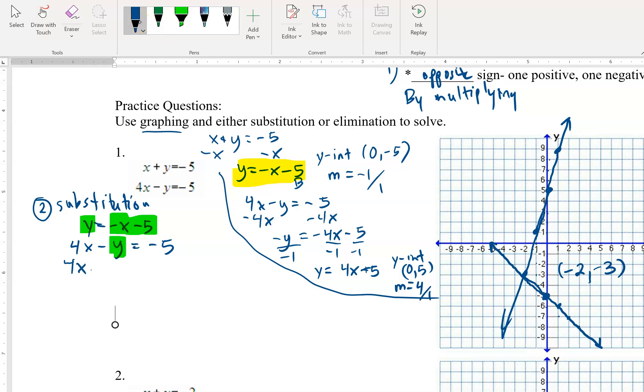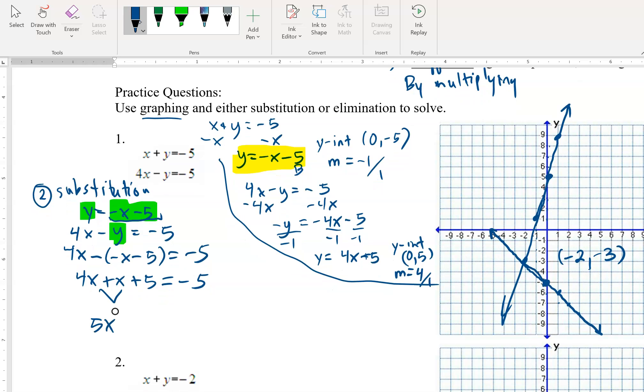So 4x minus all of this substitutes into the other equation. Well, what does that do? Well, this negative distributes. So you get 4x plus x plus 5. Combining like terms, we get 5x plus 5 equals negative 5. Subtracting the 5, we get 5x equals negative 10. And divided by 5, x equals negative 2.